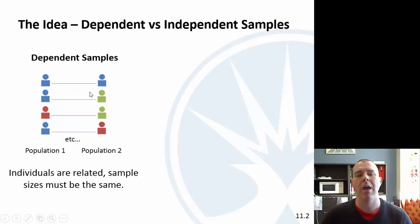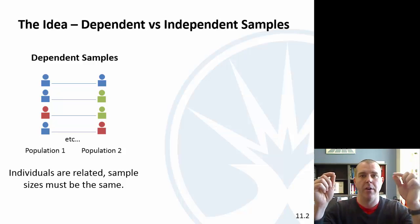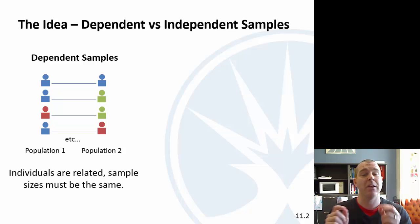First we need to talk about dependent versus independent samples. Dependent samples are when there's some pairing somehow. Sometimes I've seen this with a before and after, so it's the same person before and after, so you can look at that difference. I've also seen this with twin studies, and husband and wife. Dependent samples, they have to be paired somehow.